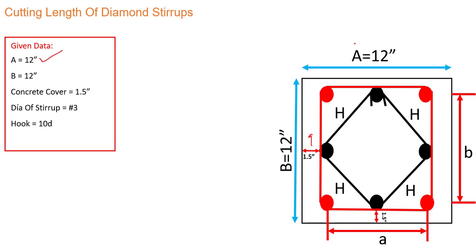Let's see the given data: A = 12 inch, B = 12 inch, concrete cover = 1.5 inch. The diameter of stirrup we are using is number 3. Note that this diamond stirrup is at the bottom of the outer stirrup — it is not inside the stirrup, it is at the bottom with no spacing.